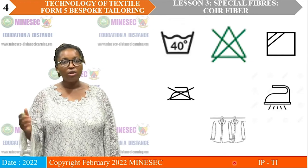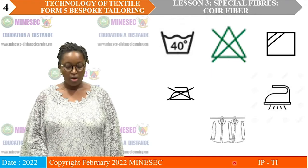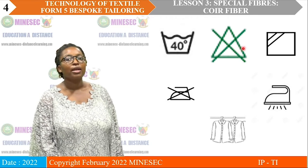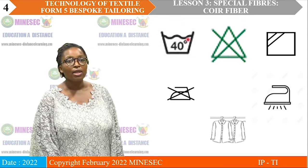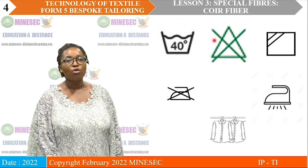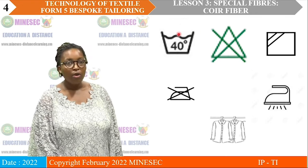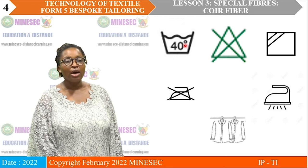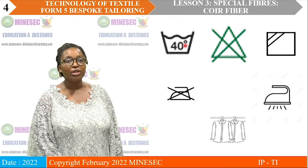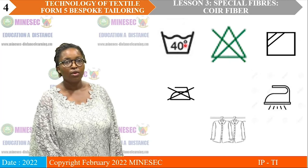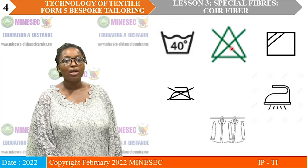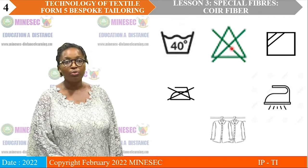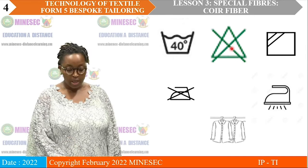I hope all of you did the assignment. Together we are going to do the correction. Here are the care label symbols we are giving to our cashmere fabric. We have the washing symbol at 40 degrees — this means your cashmere fabric should be washed at 40 degrees by hand wash. Next, we have the bleaching symbol: the triangle with a cross means it should not be bleached.